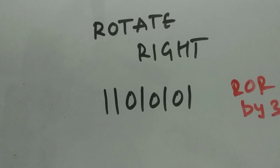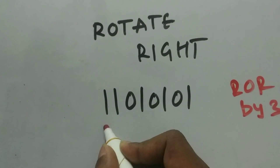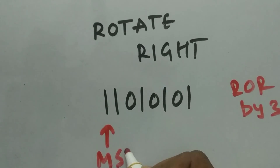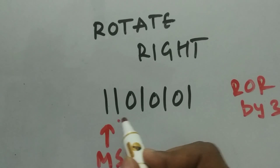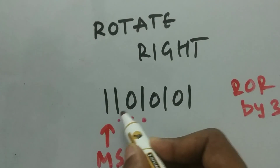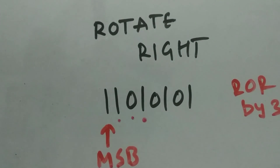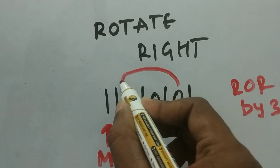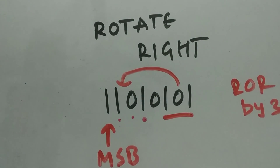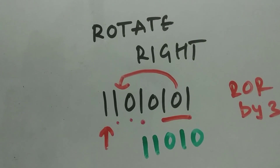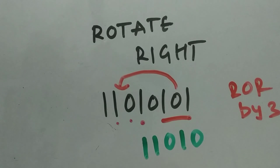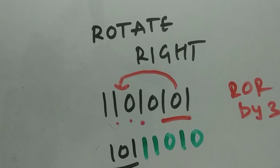Now let's go to rotate right. Using a similar example, rotating right by three: for rotate right we start from the MSB bit. We shift one, two, three positions; the MSB bit comes here, the next MSB bit comes here, and so on. In a normal shift these bits would be thrown out, but here we rotate them back to the other end. After rotating right by three, the bits one, zero, one are placed back at the MSB side.